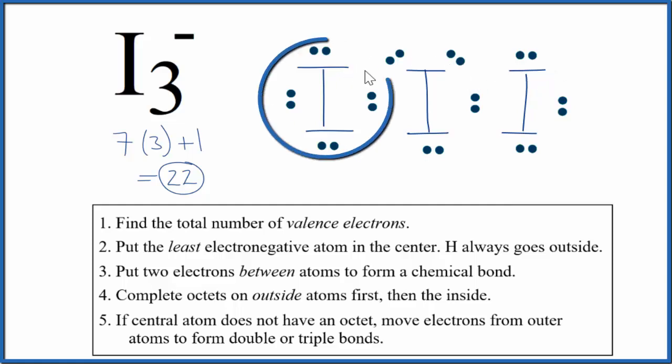So now this iodine has eight, this iodine has eight, and then the one in the center, that has ten, but that's okay. Iodine can have an expanded octet.